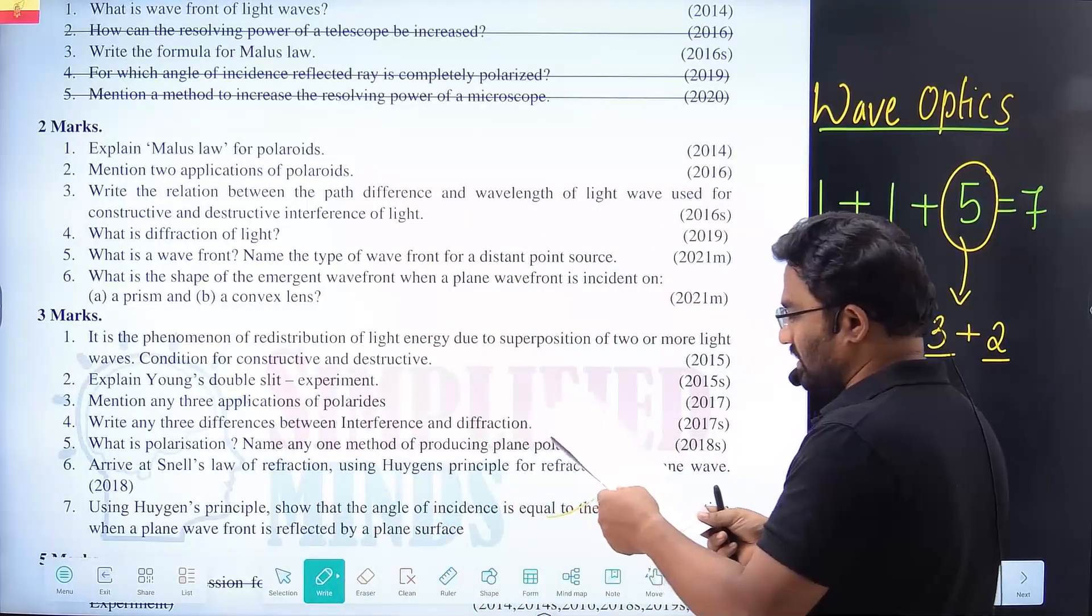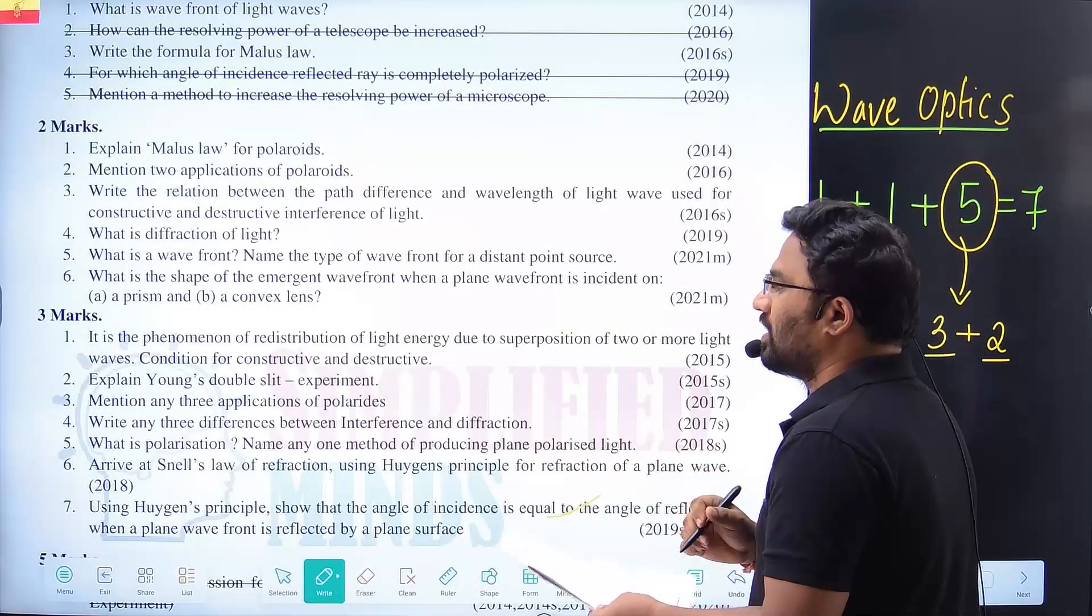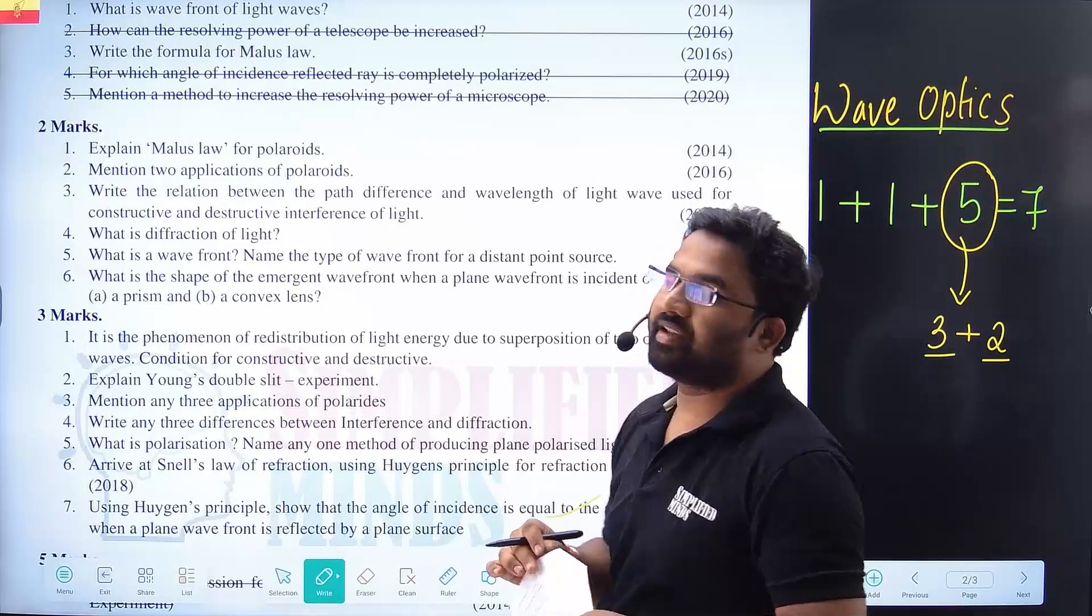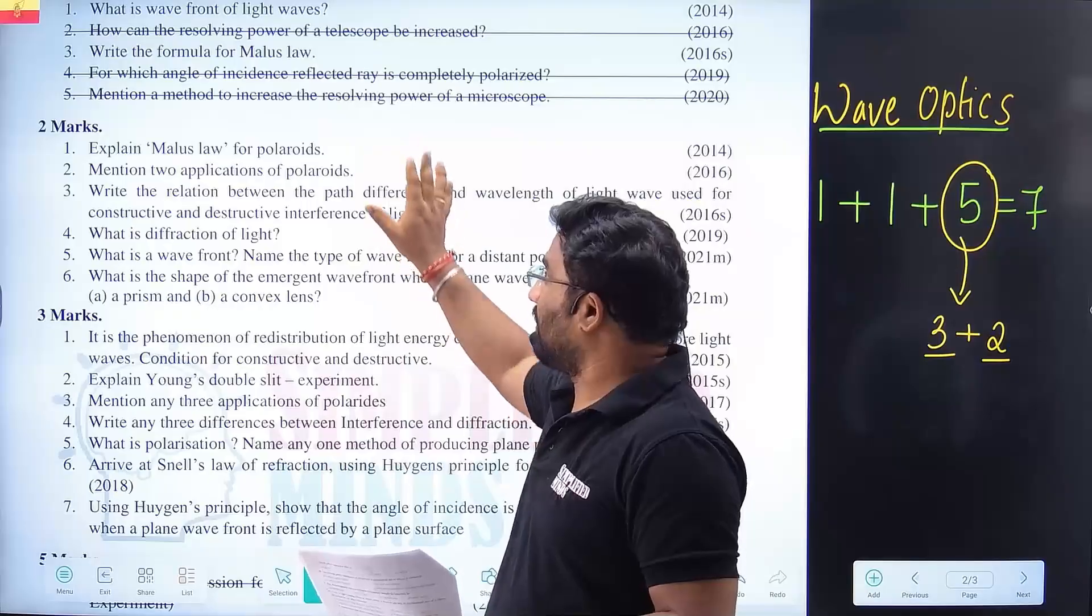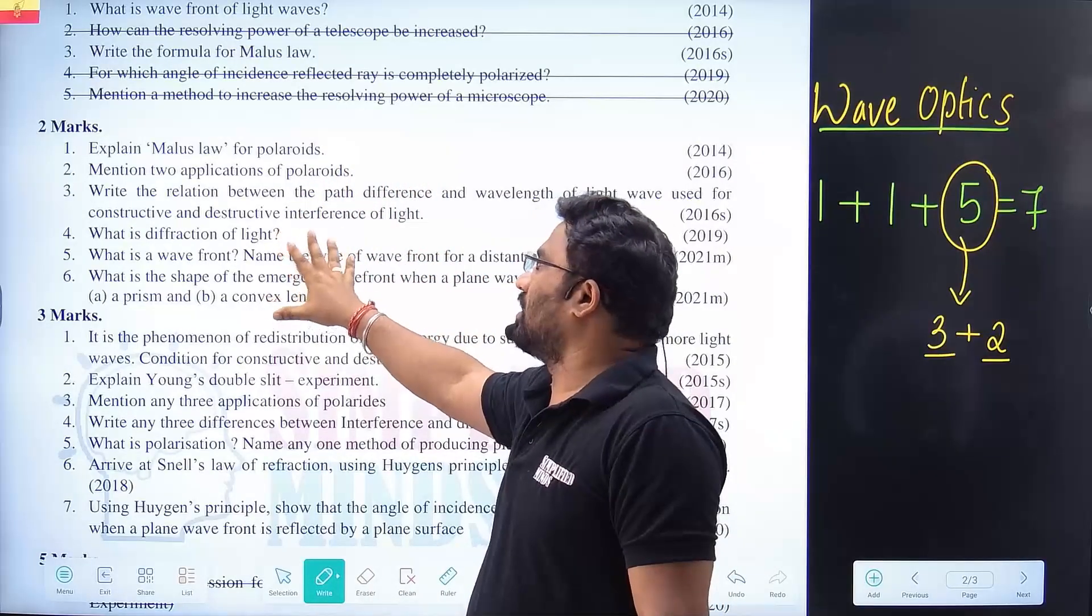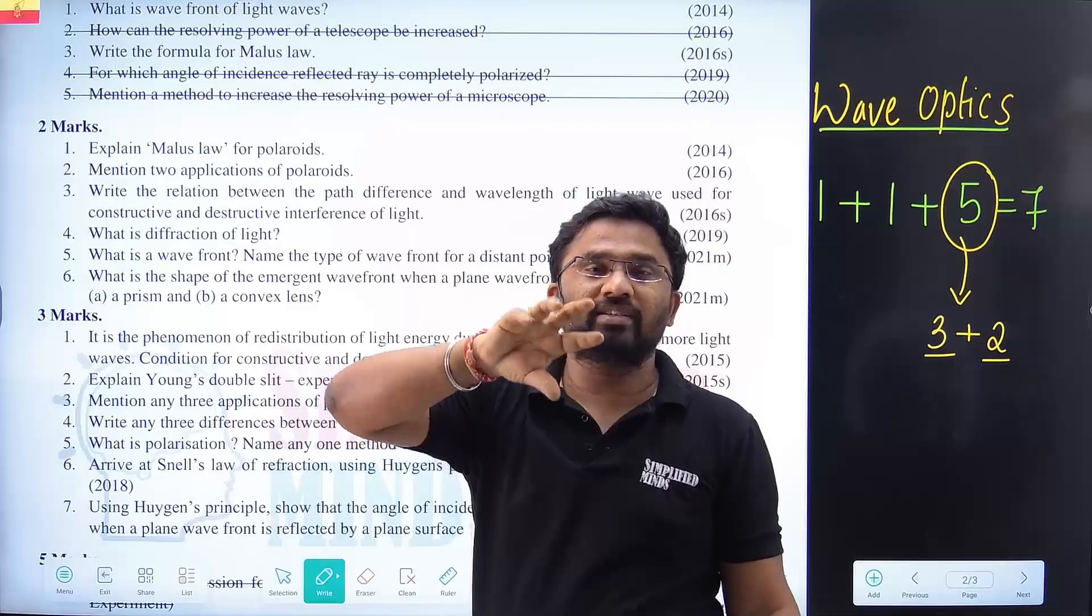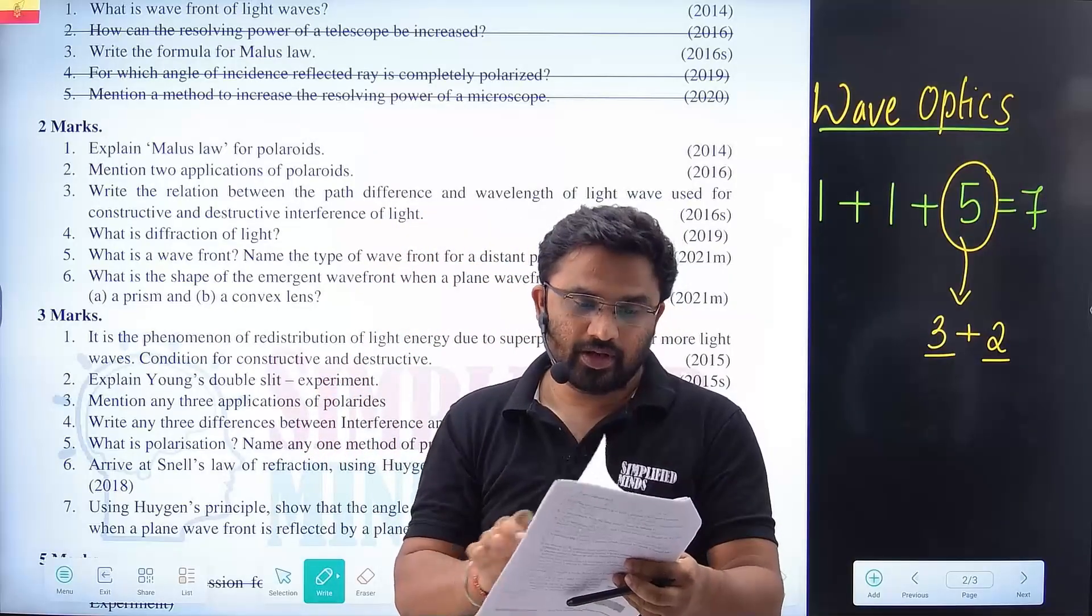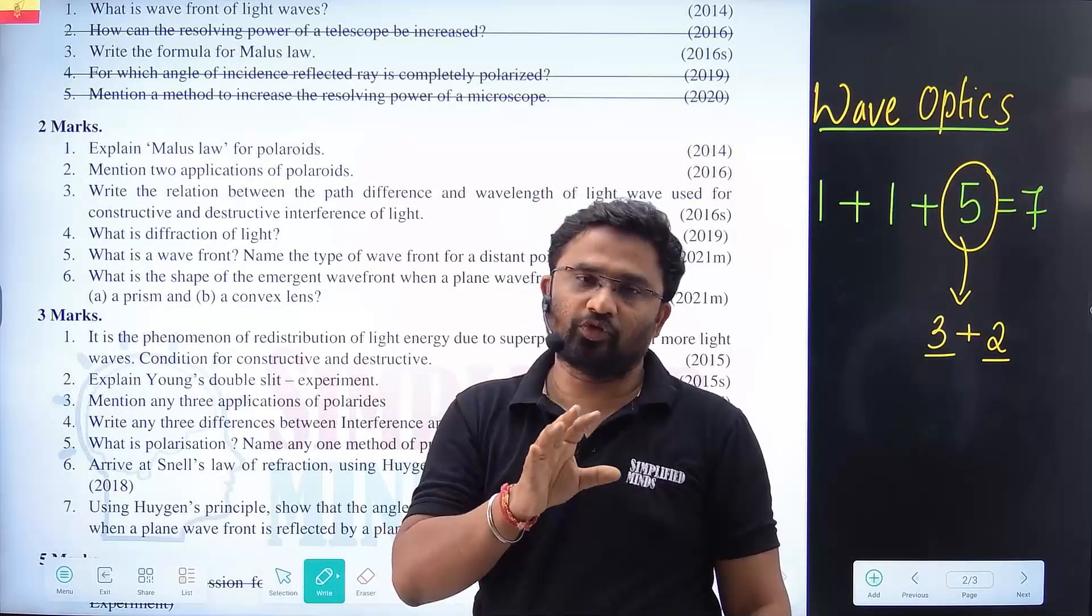Other questions for 3 marks, even in the model paper they can also ask about polarization. They deleted polarization by reflection and scattering. You have only polarization - Malus law, I is equal to I not. We have polarizer and analyzer. Intensity change. In fact, one of the MCQs was asked based on that itself. They deleted only some portions.